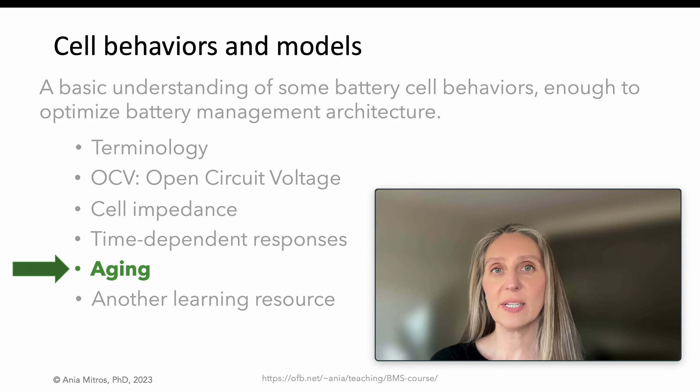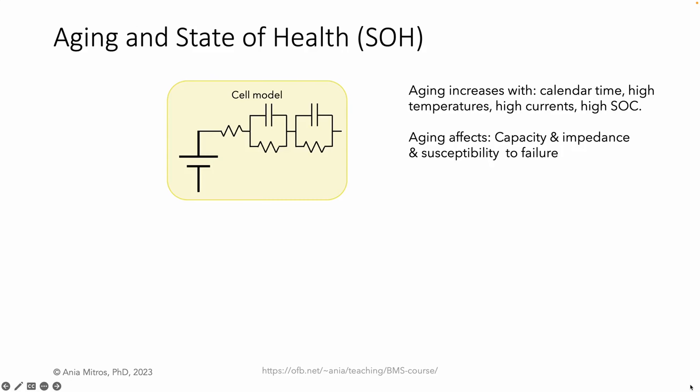Now, we'll discuss cell aging. Aging and state of health estimation go together. Aging occurs due to calendar time and is accelerated by high temperatures, high currents, and high state of charge. It affects the cell impedances and total capacity. An aged cell can also be more susceptible to failure, including exothermic behavior.